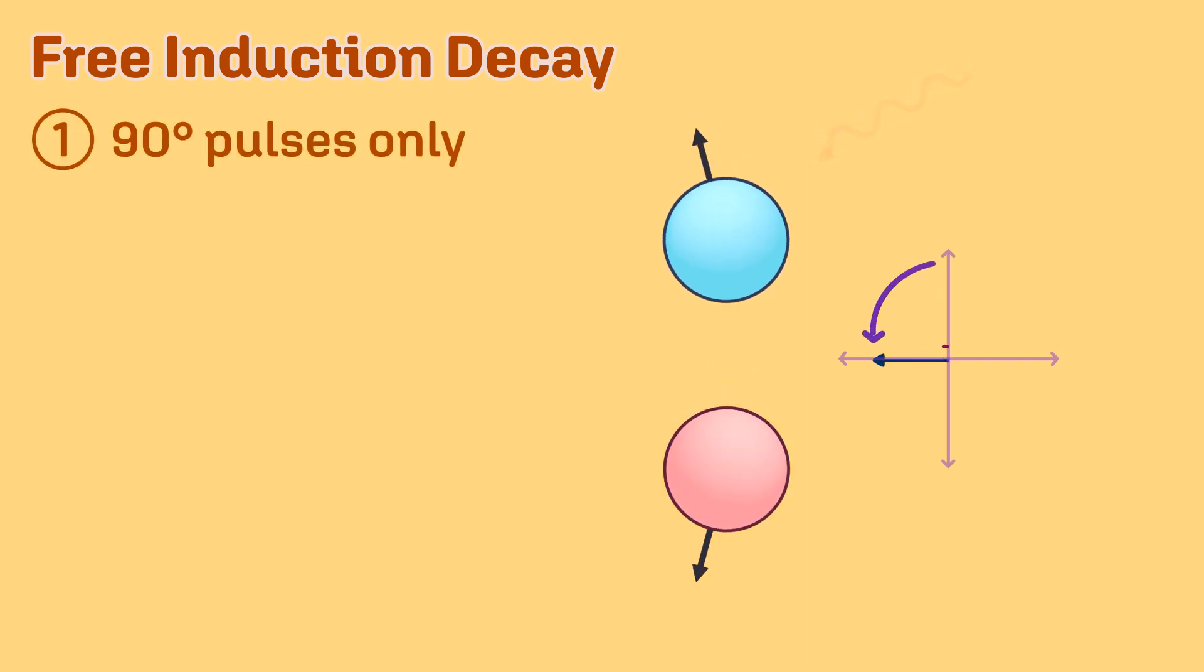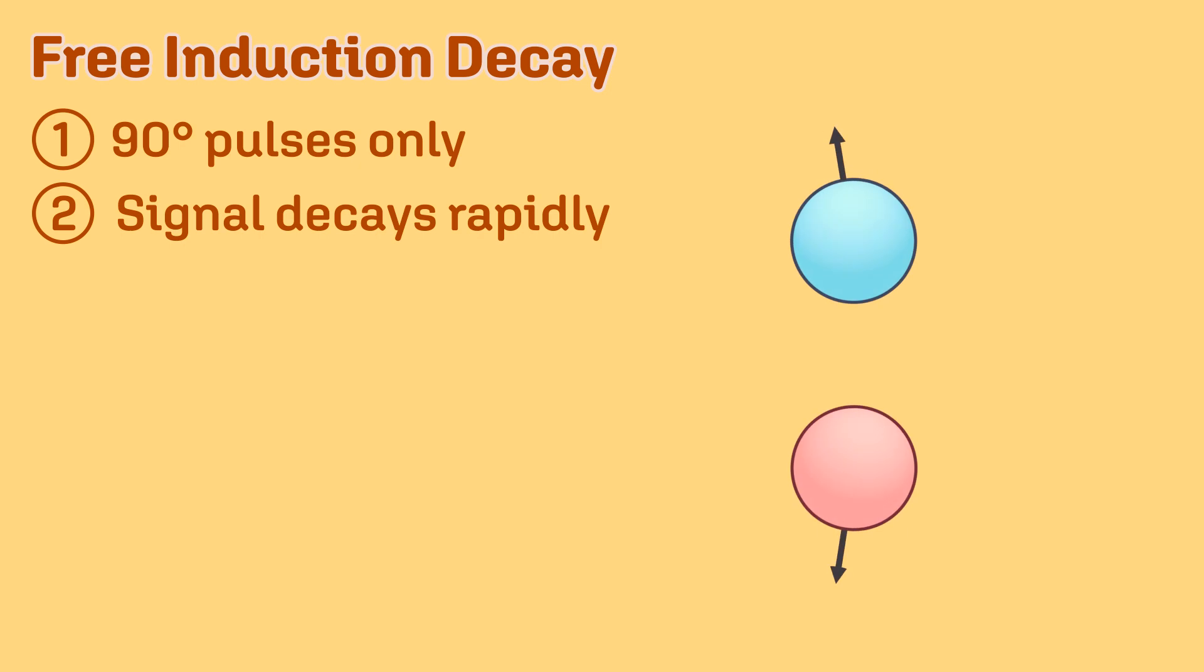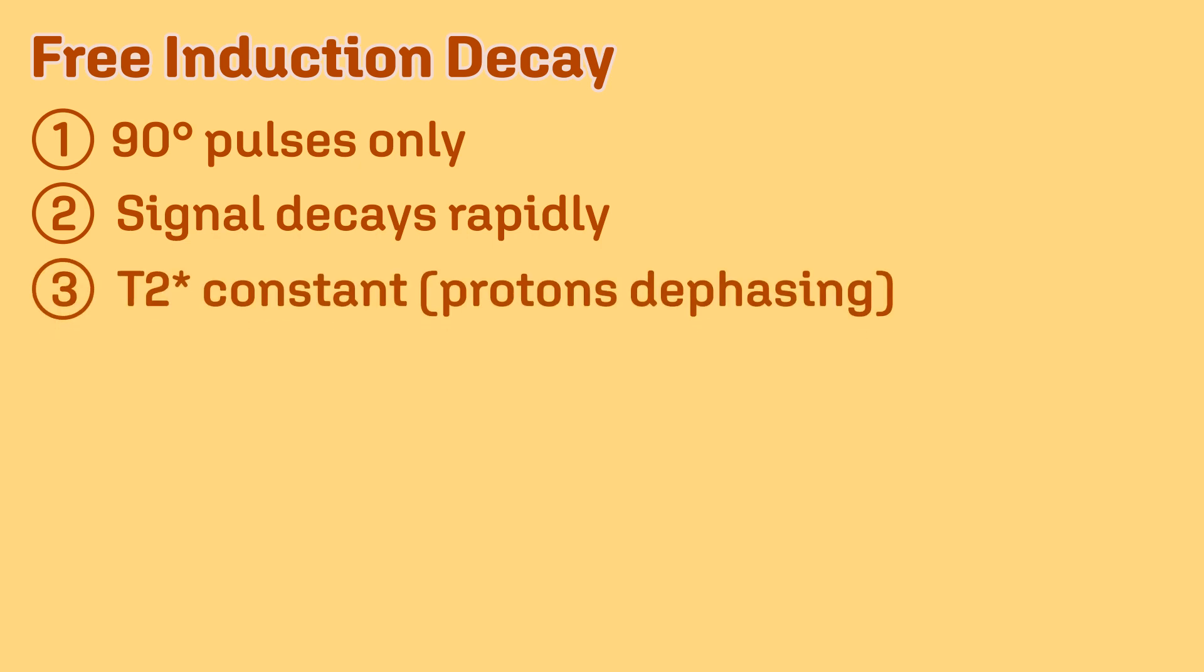Number two, the signal decays very rapidly and requires a very fast scanner to detect. Number three, the dephasing of protons occurs at a speed known as the T2 star constant.